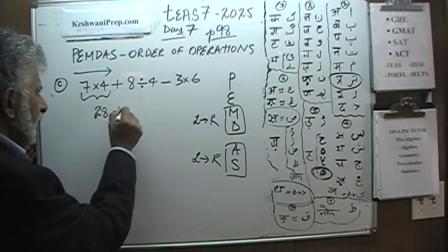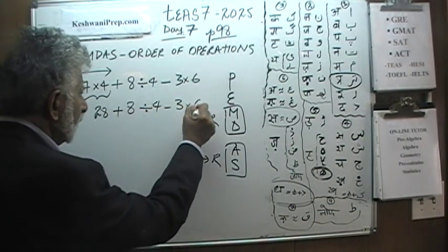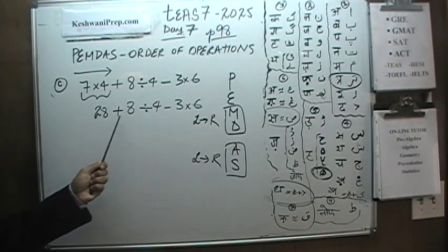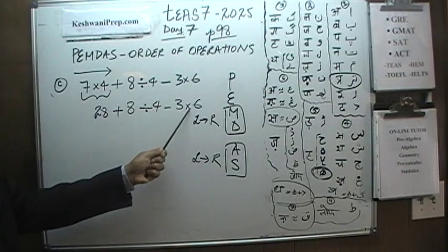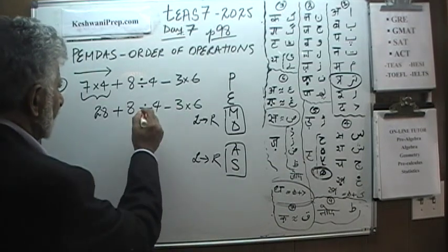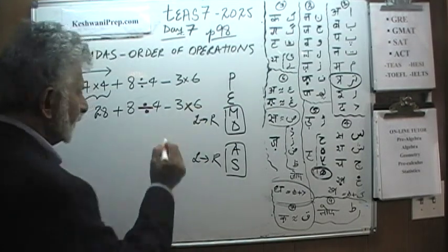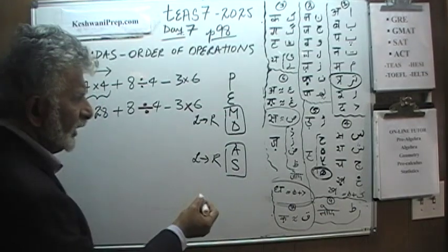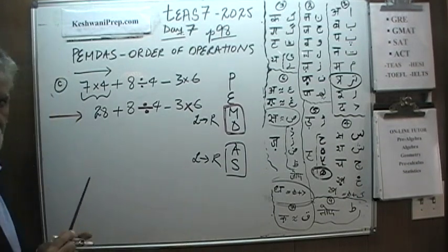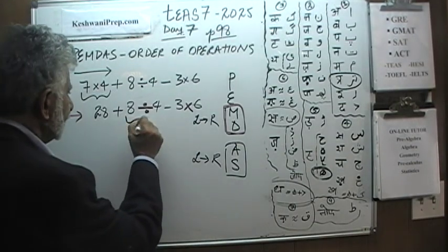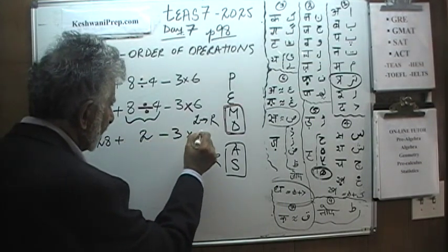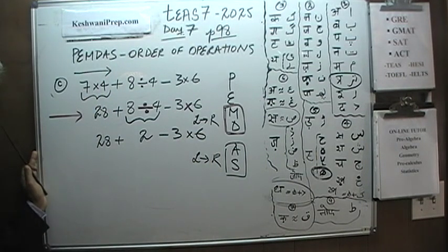That part is done. Now we have 28 plus 8 divided by 4 minus 3 times 6. Do we do the addition first? No — we have addition, division, subtraction, and multiplication. Moving from left to right, the division appears before multiplication, so we do that one first. 8 divided by 4 is 2. We rewrite: 28 plus 2 minus 3 times 6. Just do one step at a time.